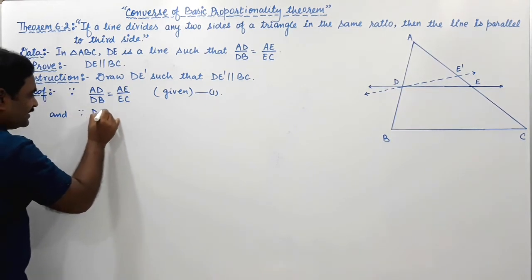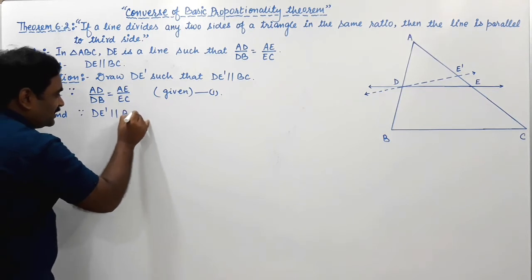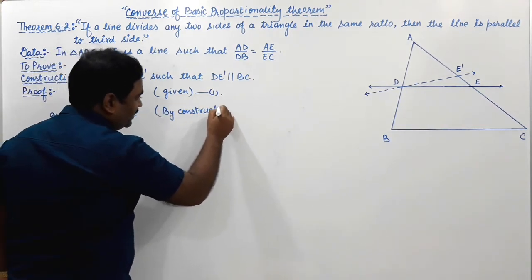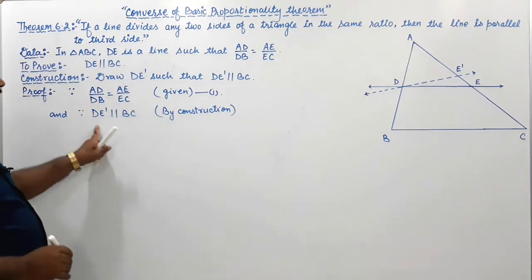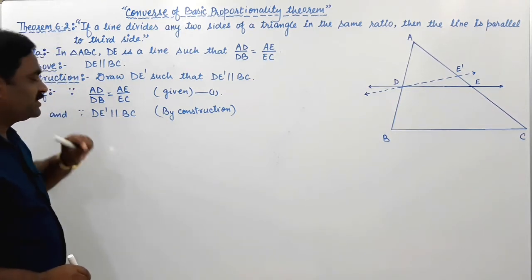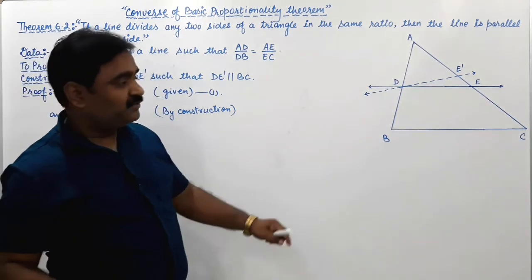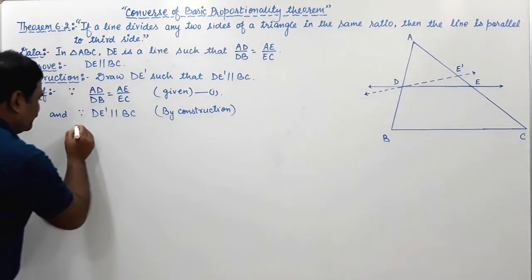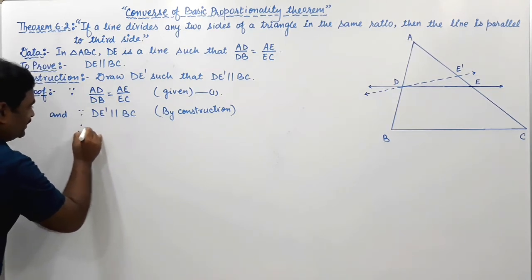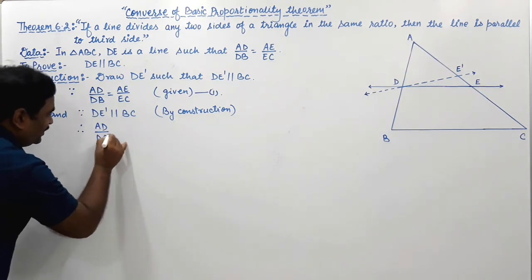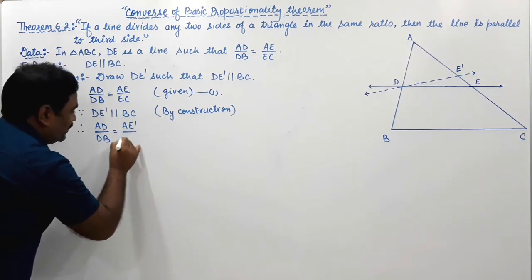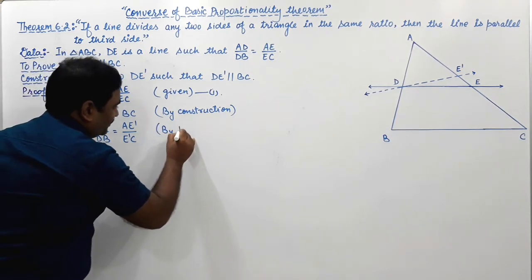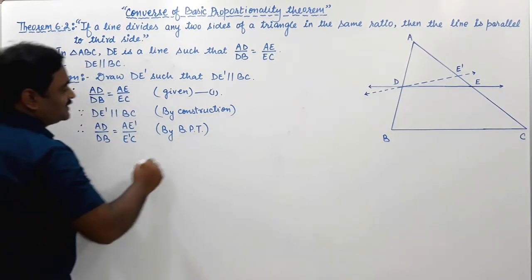And since DE' is parallel to BC by construction — this we have constructed. Since DE' is parallel to BC, then by Thales' theorem (Theorem 6.1), this line DE' is parallel to BC, so by Basic Proportionality Theorem, AD upon DB equals AE' upon E'C. Call this equation number 2.